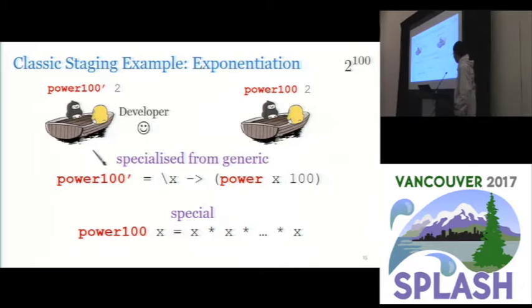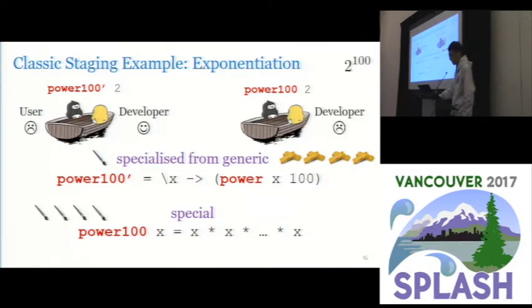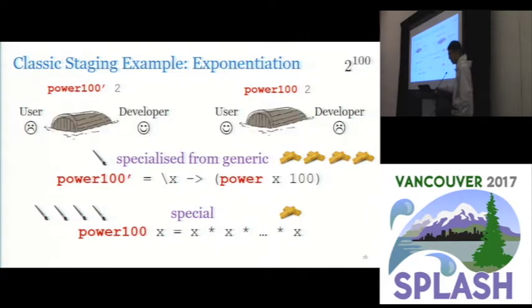So using the example of computing 2 to the power of 100, we compare the performance of these two programs. For the first one the developer's happy because he or she doesn't need to write too much code. But the user's not happy because it has a high runtime overhead. It has 100 recursive calls to the generic power function. For the special program the developer's not happy because he has to do some repeated work, and user's happy because it has a lower runtime overhead.